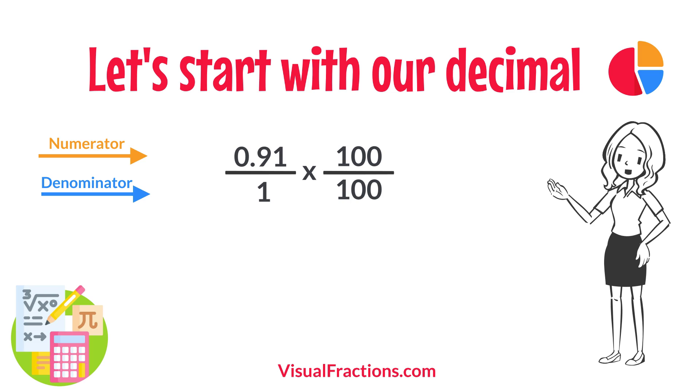So, 0.91 times 100 gives us 91, and 1 times 100 gives us 100. This translates 0.91 to the fraction 91 over 100.